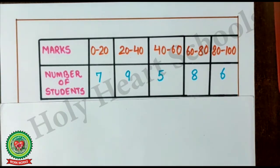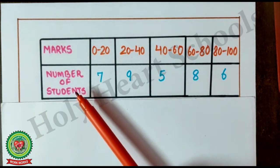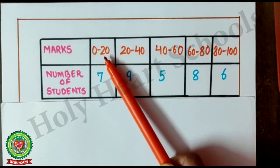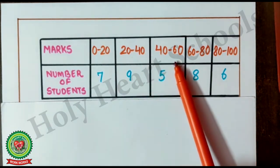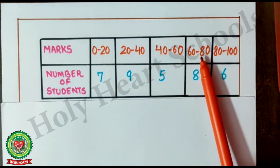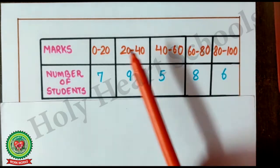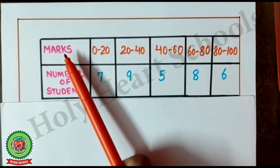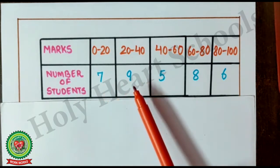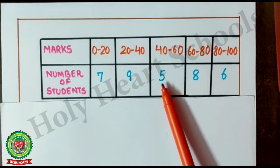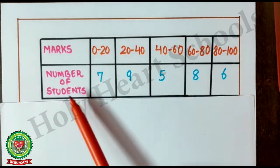Now, let's see one more example. Marks. Number of students. Here, it is given. 0 till 20, 20 till 40, 40 till 60, 60 till 80, 80 till 100. That means, in intervals, marks are given. And number of students. 7, 9, 5, 8, 6. It is frequency.